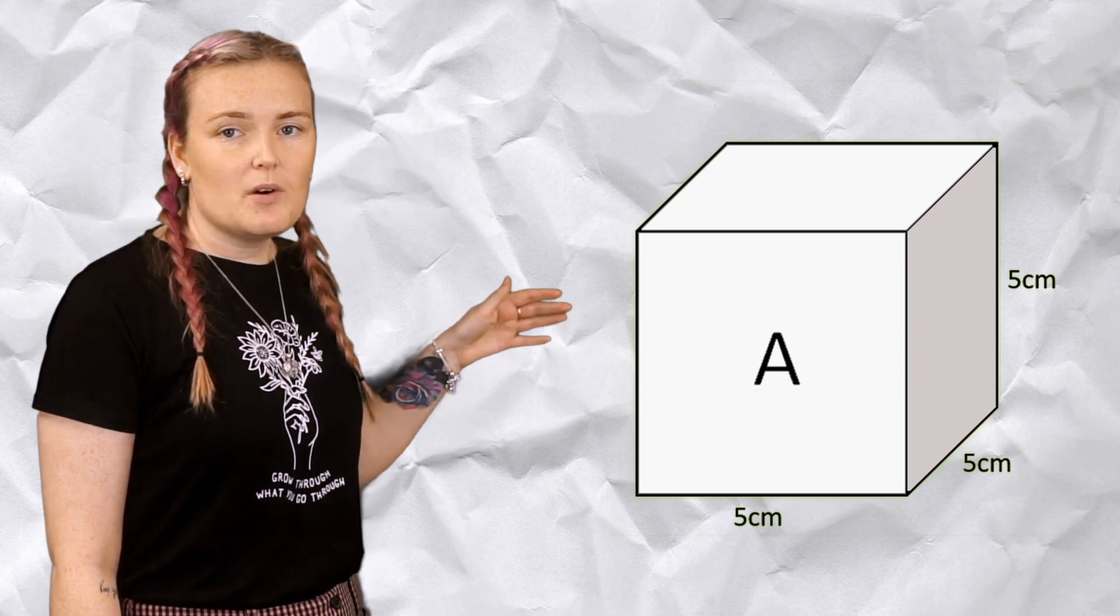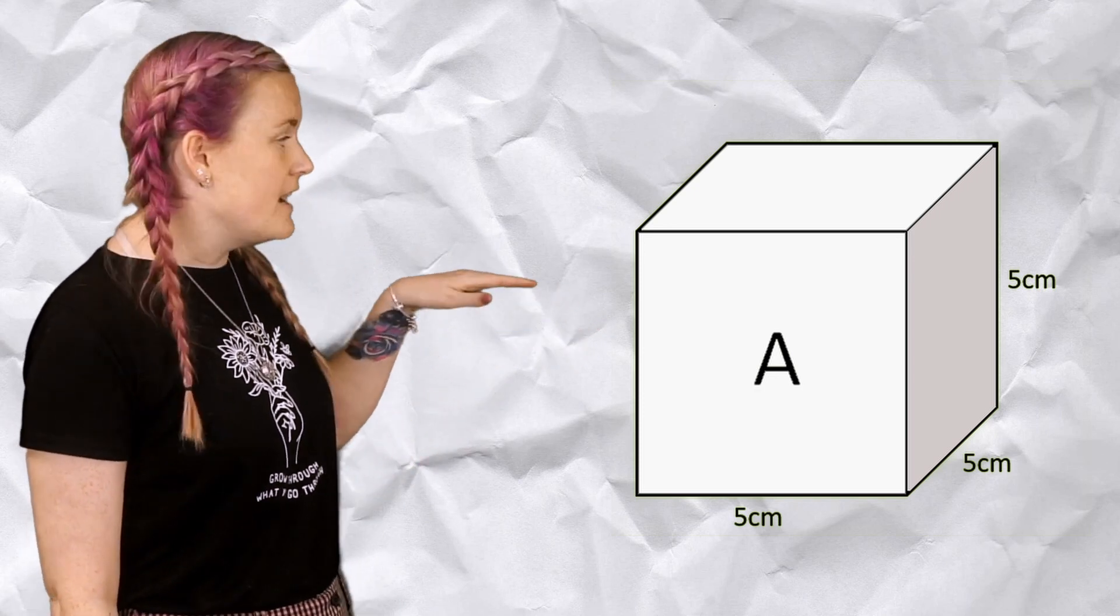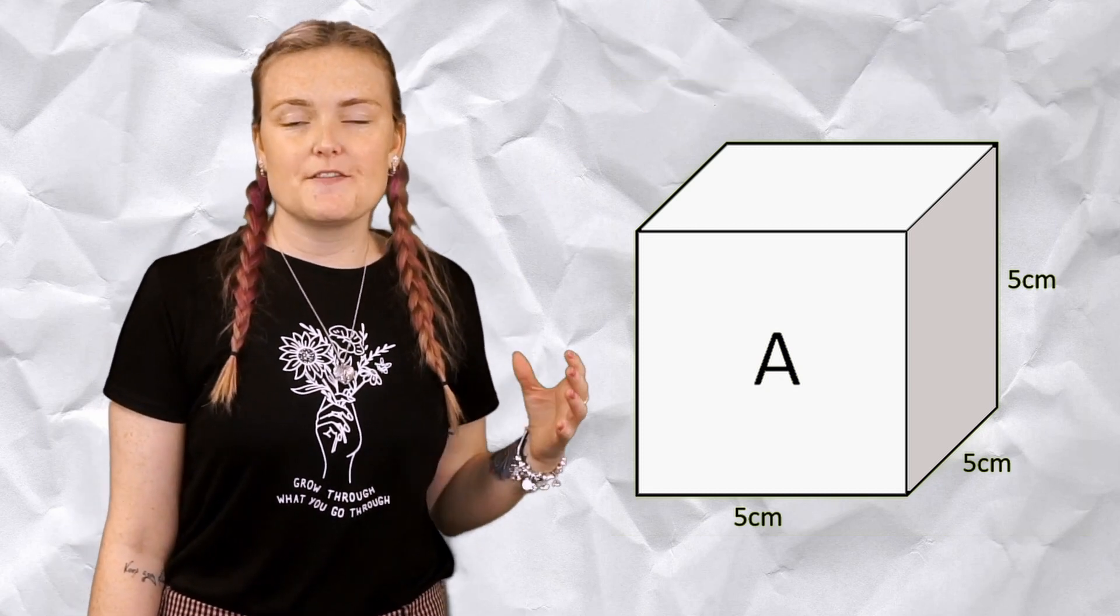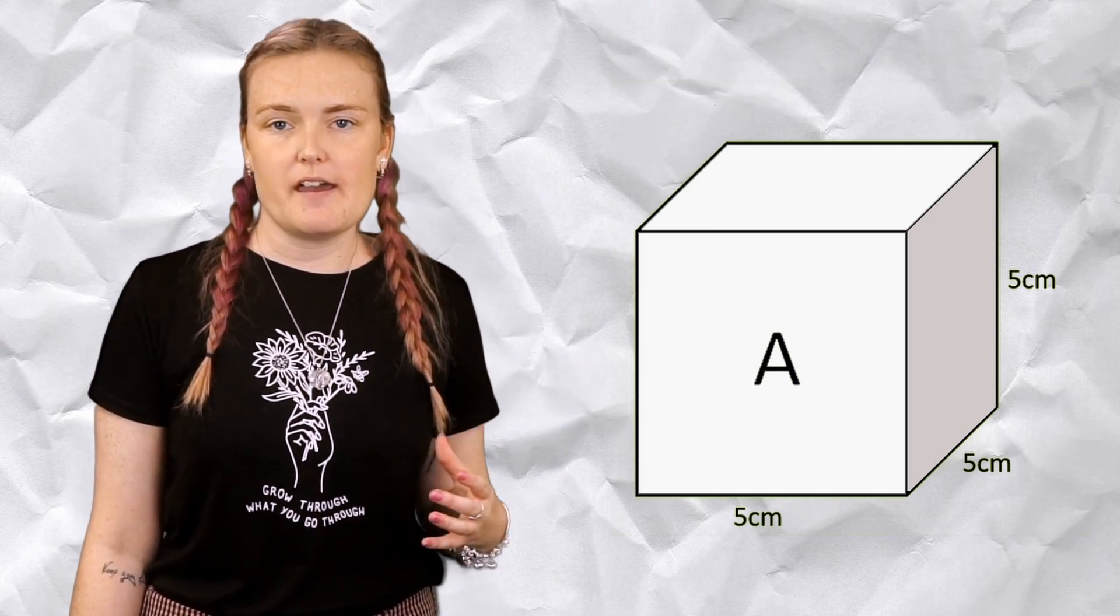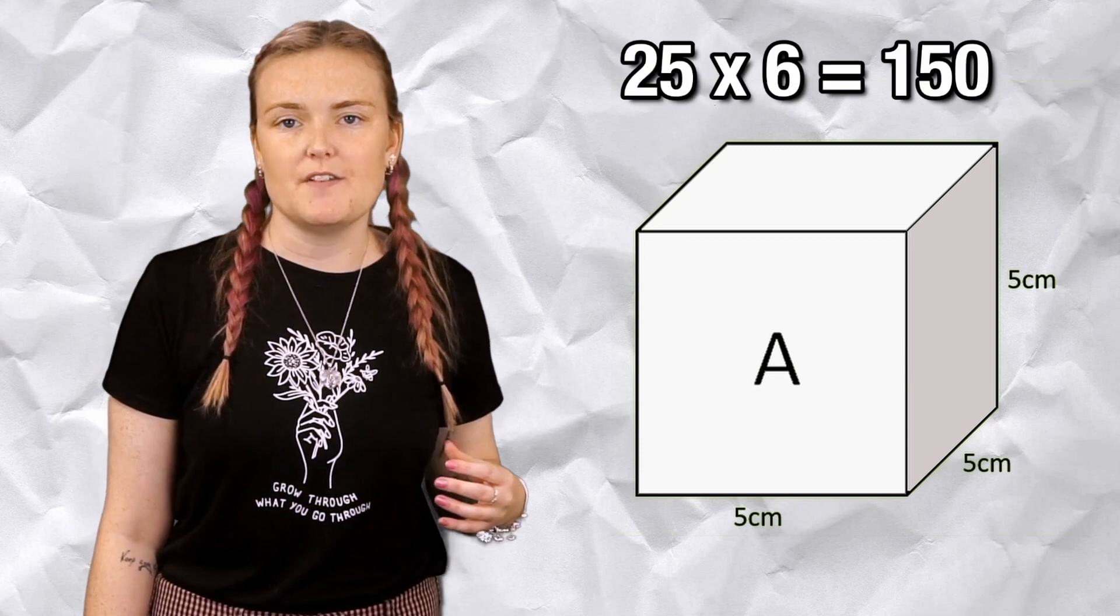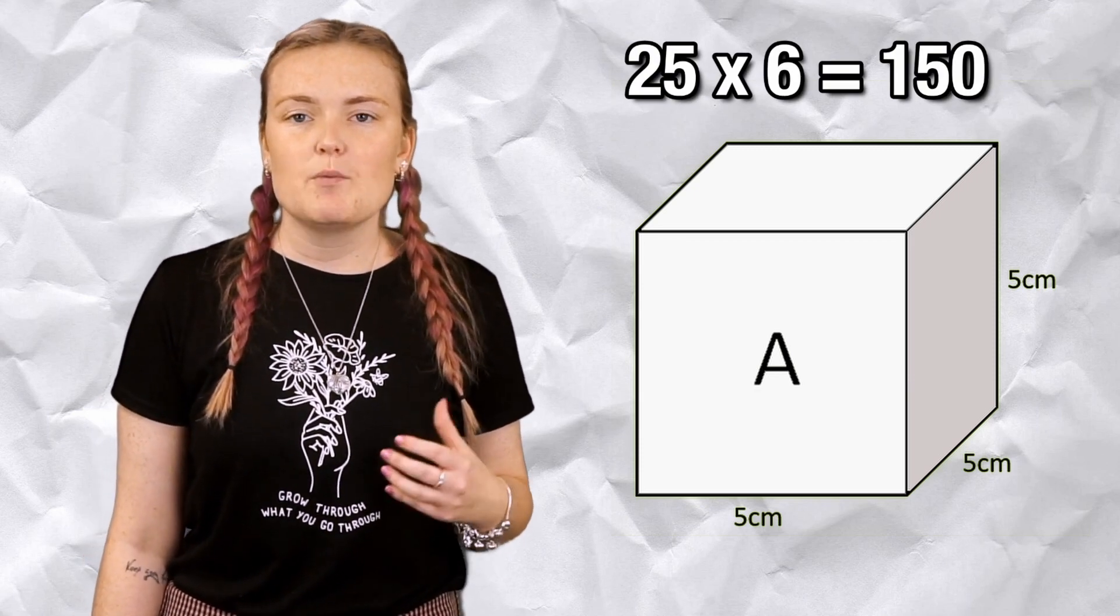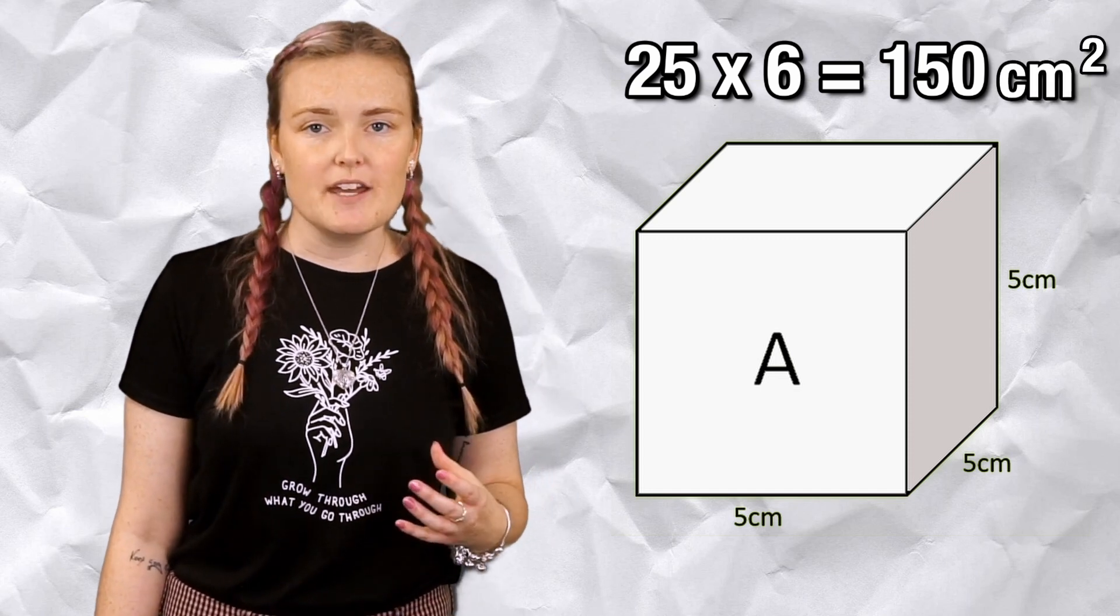For a cube all the sides are the same, so all I'm going to do is find the area of one face. So 5 by 5 which is 25. Now a cube has six faces and they're all exactly the same, so I can just do 25 times 6, which is 150. And we're still dealing with area so our units are centimeters squared.